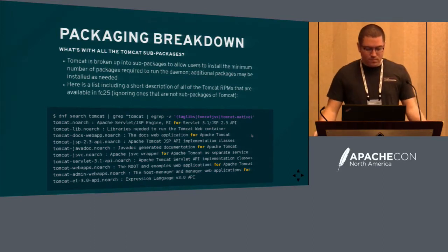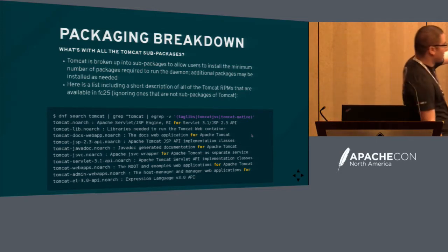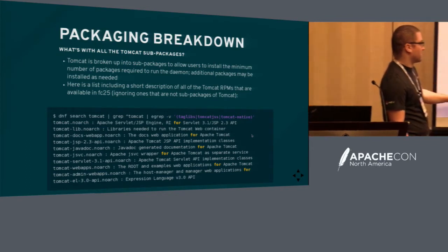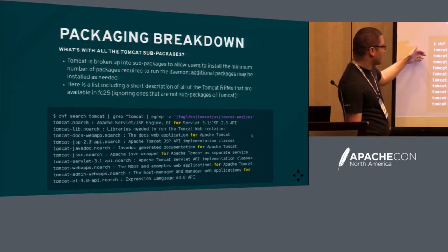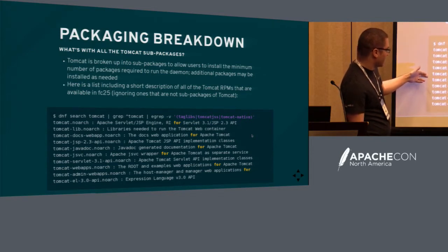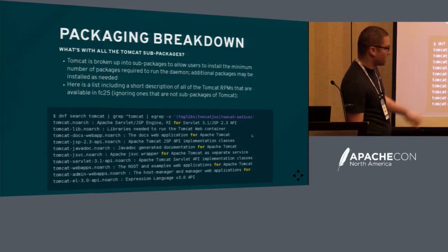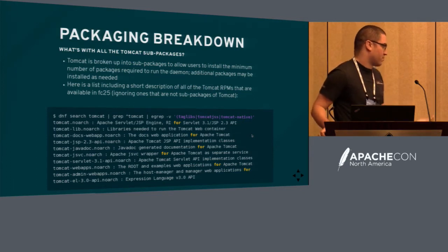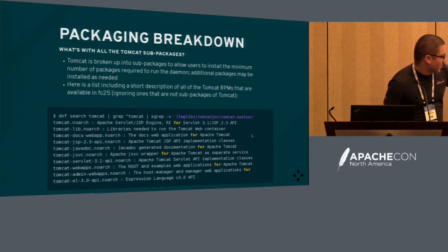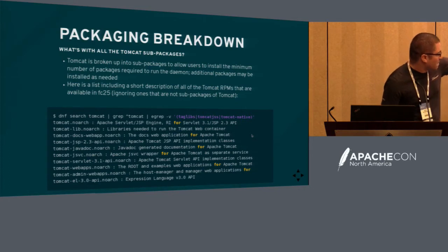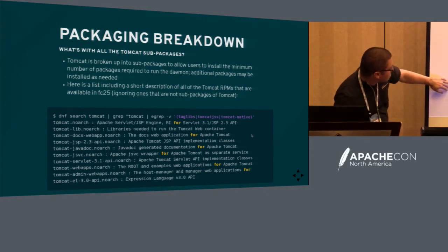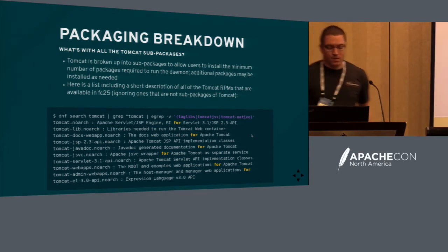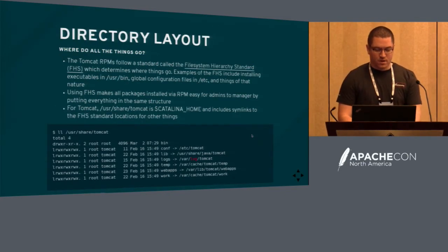The packaging breakdown: Tomcat has a parent package and all these are subpackages, which means we don't include all the libraries in the main Tomcat package — they're in lib. We break up the web apps so you can install the docs web app separately, the Javadoc, JSVC support separately, the root and examples web apps, and the admin web app. There's a Tomcat-lib which has almost all the libraries, and then JSP, EL, and servlet API are each in their own individual packages.